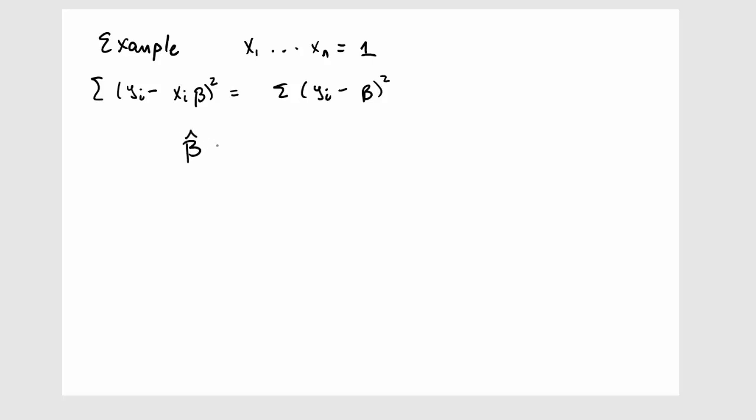Our result says that beta hat, for regression through the origin in this case, is summation yi xi divided by summation xi squared, which in this case is summation yi divided by summation xi squared.